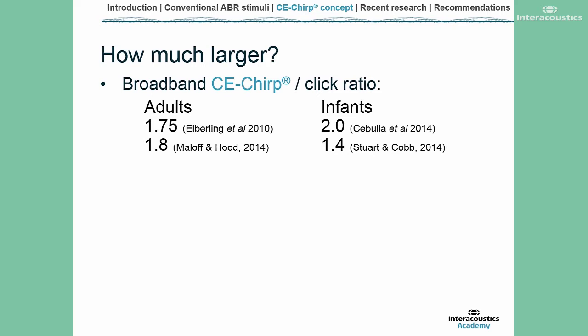There have been a couple of groups who looked at it in infants. Sabula et al found that it was twice as large, whereas Stuart and Cobb found it was 1.4 times as large. The difference here may be just down to the design of the actual studies that were carried out.